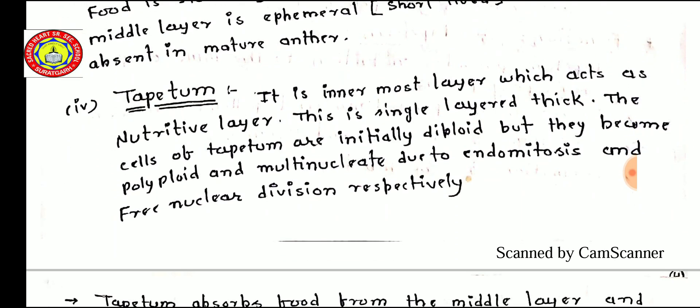The next layer is the tapetum, also known as the nutritive layer. It is the innermost layer and acts as a nutritive layer. It is a single cell thick layer. The cells of the tapetum are initially diploid, but they become polyploid and multinucleated due to endomitosis and free nuclear division, respectively.